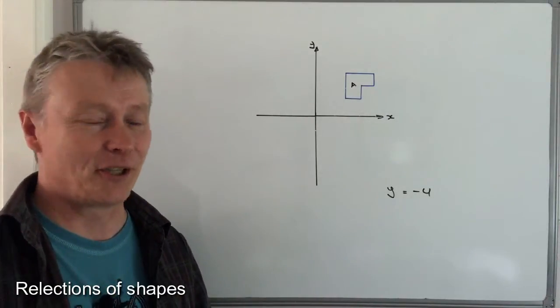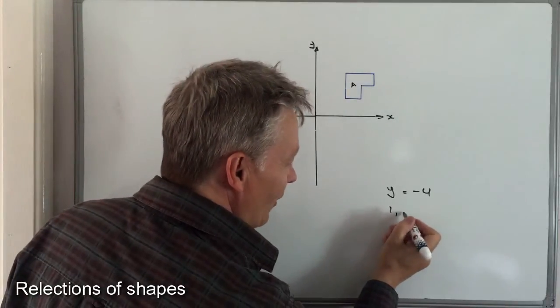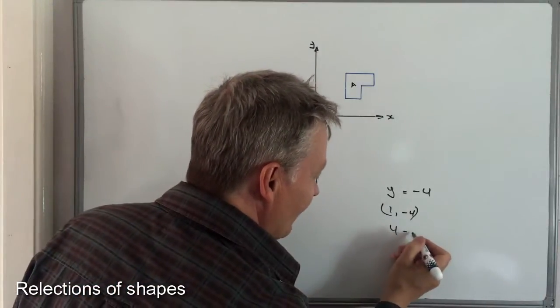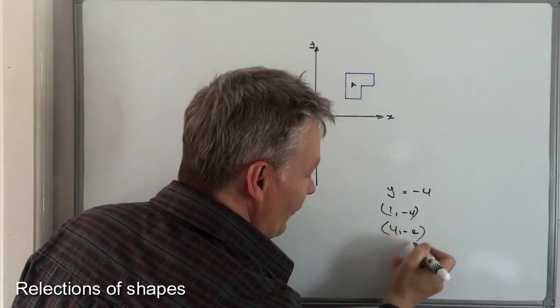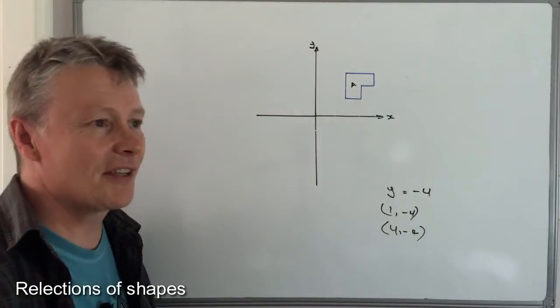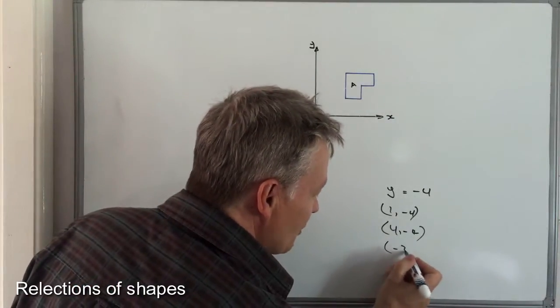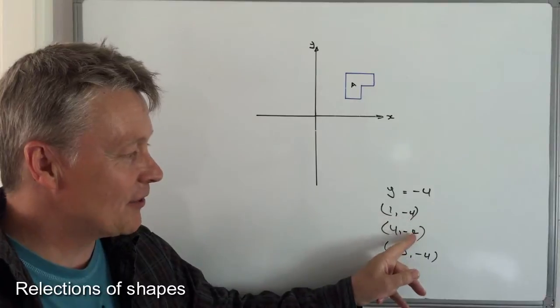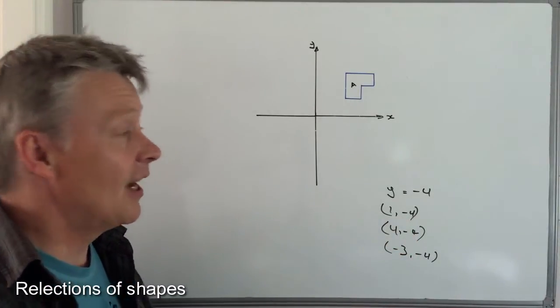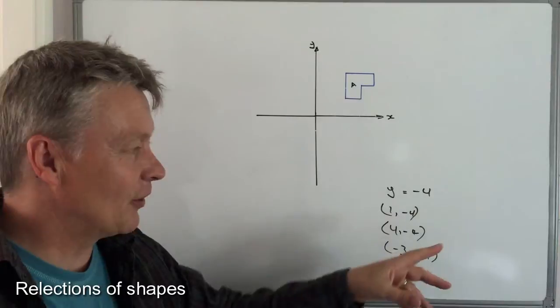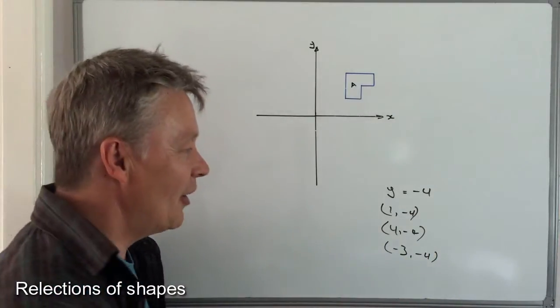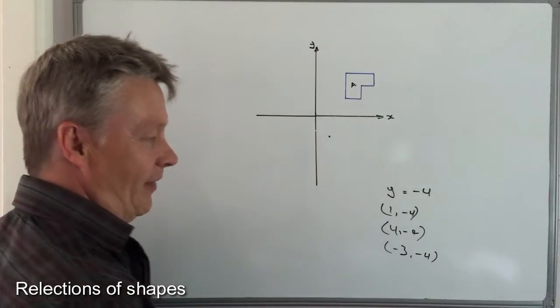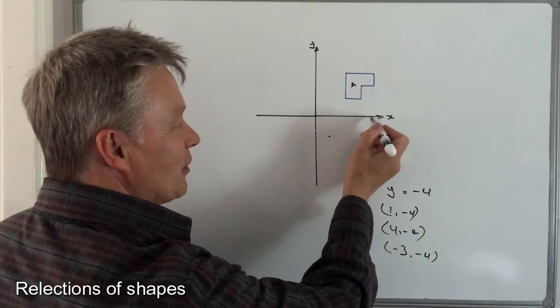So I'm gonna say one minus four, and I'm gonna say four minus four, and then I'm also gonna say something like minus three minus four. In all of these cases y equals minus four. So if I plot those points and then join them up, I've then got the line, the mirror line that I'm looking for. So the first one is one minus four, come along one down to minus four, let's call it about there. Four minus four, along to four, down to minus four about there, and minus three minus four about there.